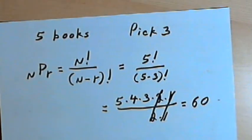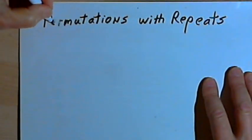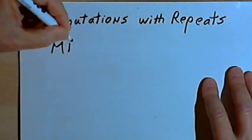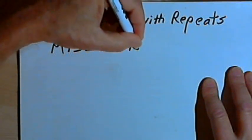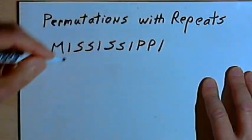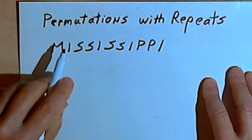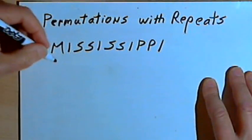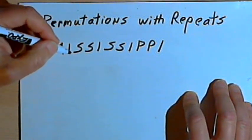Now, the next situation happens when you've got some repeats among the elements. In other words, some of the elements are exactly the same. So for instance, if we took the word Mississippi, M-I-S-S-I-S-S-I-P-P-I, we've got a lot of repeats in that. We're going to have to use a slightly different formula when we're dealing with repeated elements. So what I'm going to do is count how many of each letter I have.